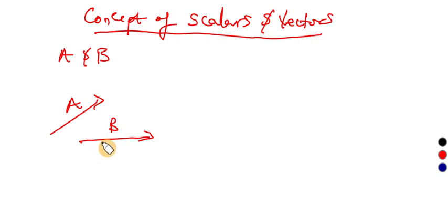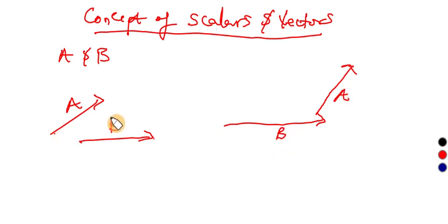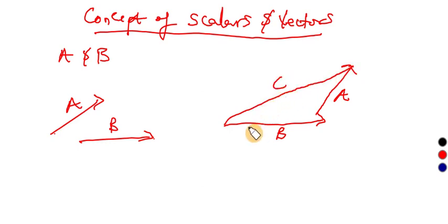How do we add vectors? You place the head of one to the tail of the other. This is the head and this is the tail. We can then have a third vector which gives the resultant — the effective value both in magnitude and direction. So the resultant c is a plus b, the addition of two vectors.